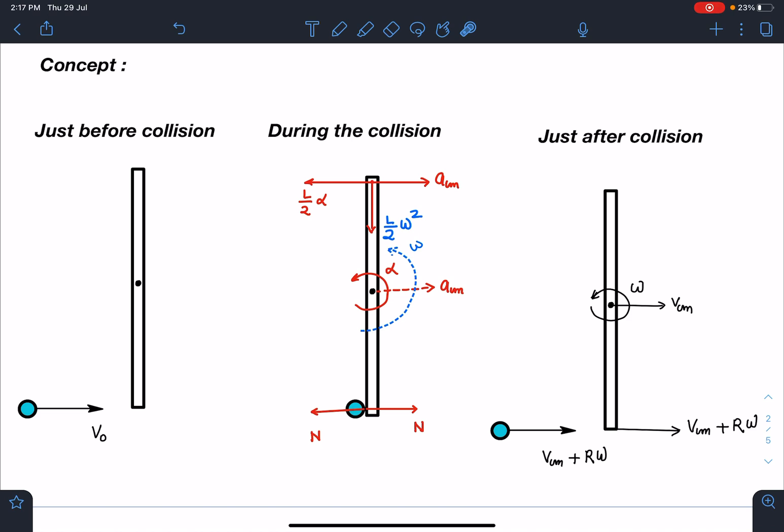After the collision, this particle is moving with vcm plus r omega, and this is also moving with vcm plus r omega after the collision. These are the velocities: velocity of center of mass of the rod and angular velocity of this rod. Since e is given zero, these two points will be moving together, and it is given in the problem that the particle does not stick to this, so it will be moving with the same velocity but doesn't stick to the rod.